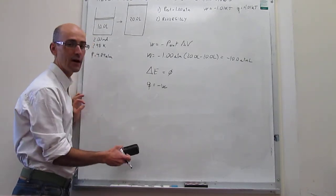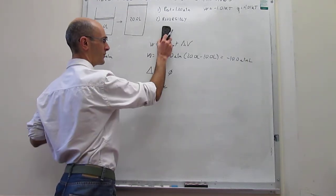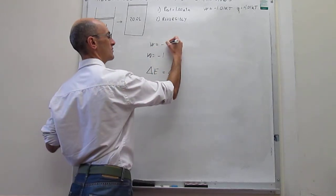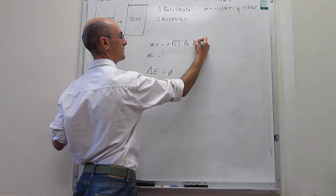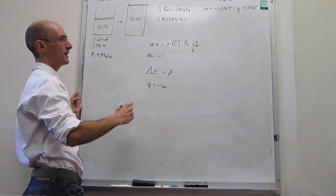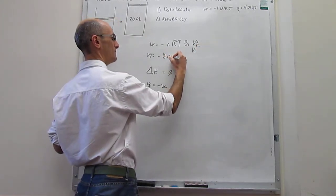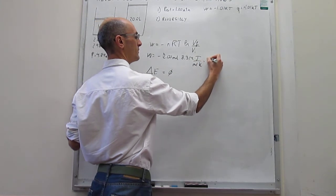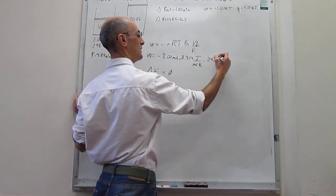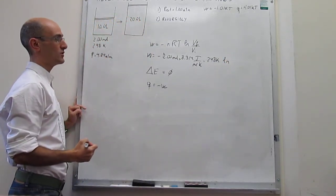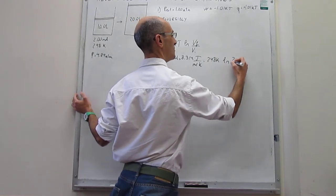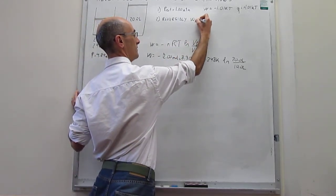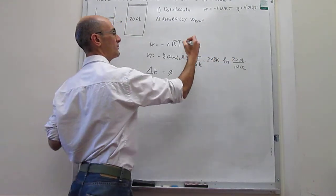We derived in a prior video how to calculate the work in a reversible isothermal expansion. It is equal to minus nRT times the natural log of the final volume over the initial volume. For this particular case, we have 2 mol, R = 8.314 J/(mol·K), T = 298 K, and the natural log of 20 liters over 10 liters. The reversible work is equal to −3.43 kJ.